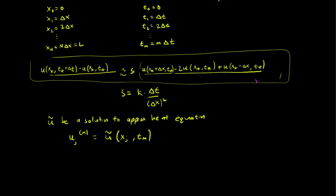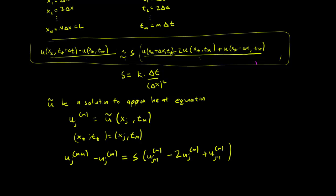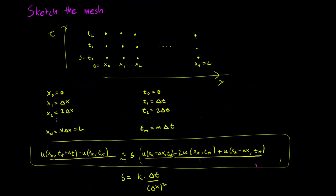If we set x star and t star to be x_j and t_m, and we have a relationship between the u_j's for the points on the mesh.